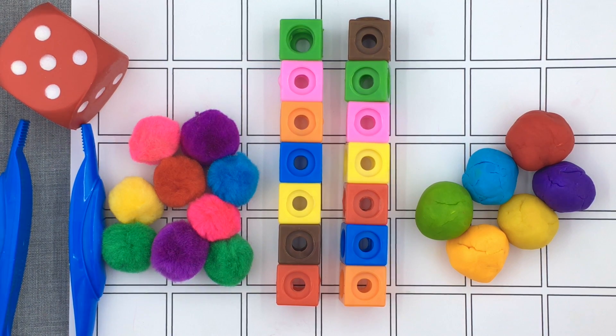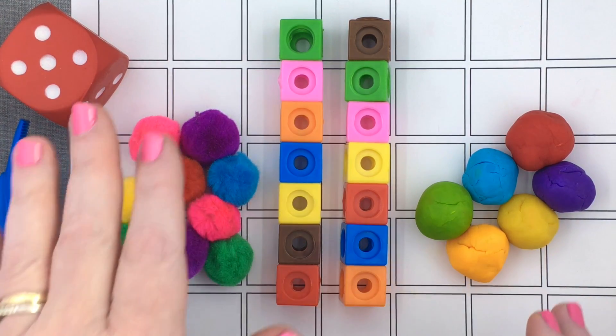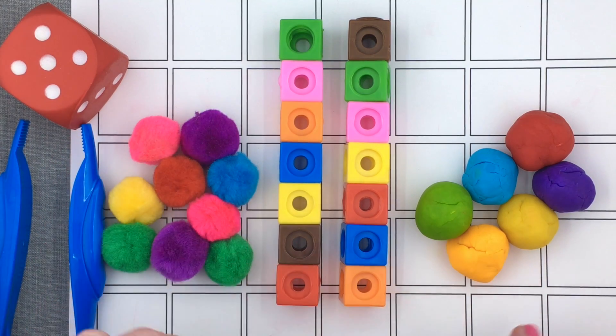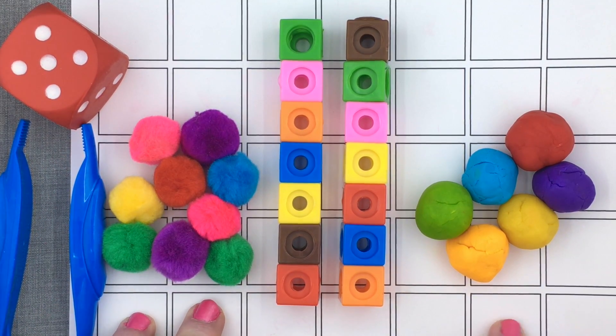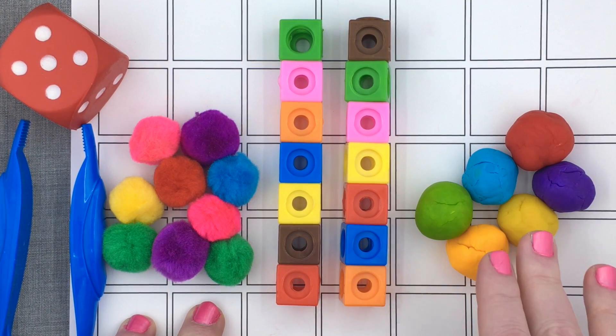Hi, I'm Shelley Lovett with ChildCareLand.com. Today I want to share with you a roll and count activity. This mat has five rows of seven, so there's a total of 35 squares.